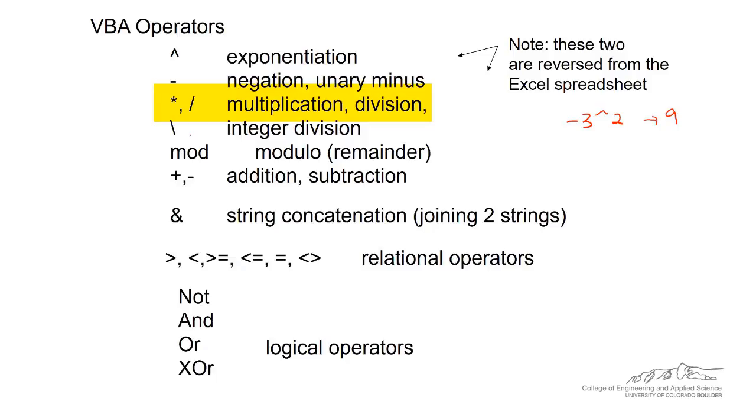Multiplication and division are the asterisk and the forward slash. You can do integer division using backslash. There's a really popular function called mod, so that's the remainder. For example, if we did five mod three, that would give us two. Addition and subtraction are plus and minus. If you're joining two strings or a string with a number, you can use the ampersand, and that's joining two strings or joining a string and a number. It's used a lot in message boxes and input boxes.